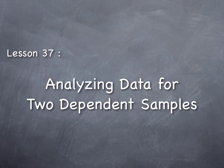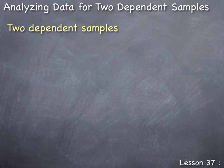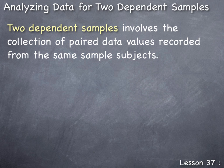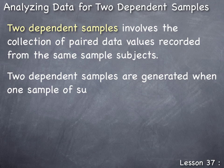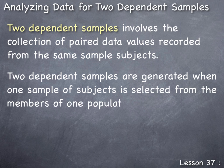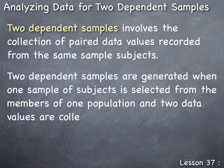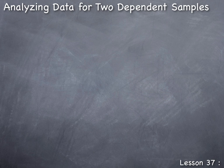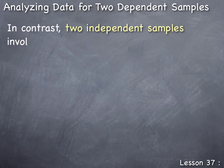Lesson 37: analyzing data for two dependent samples. Two dependent samples involves the collection of paired data values recorded from the same sample subjects. Two dependent samples are generated when one sample of subjects is selected from the members of one population and two data values are collected from each of the subjects in the sample.